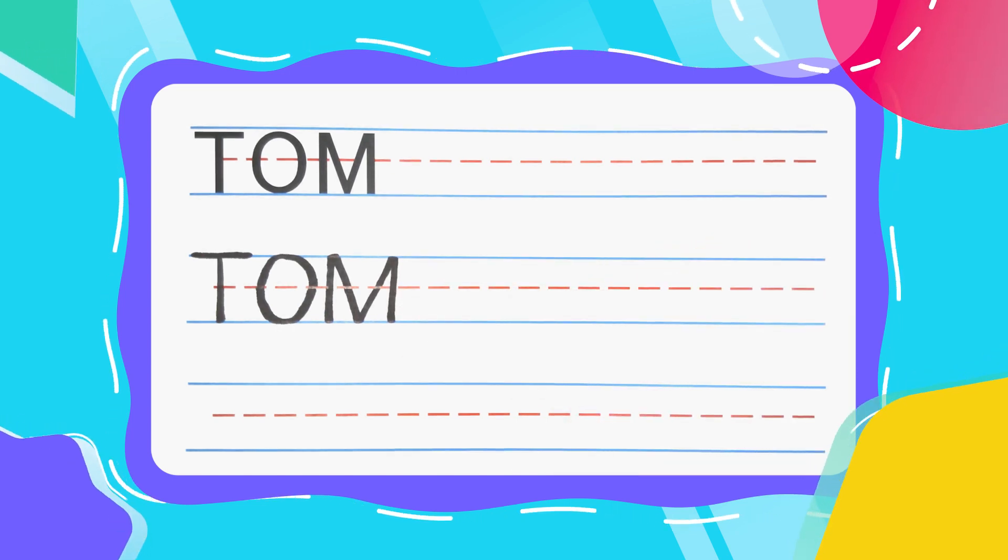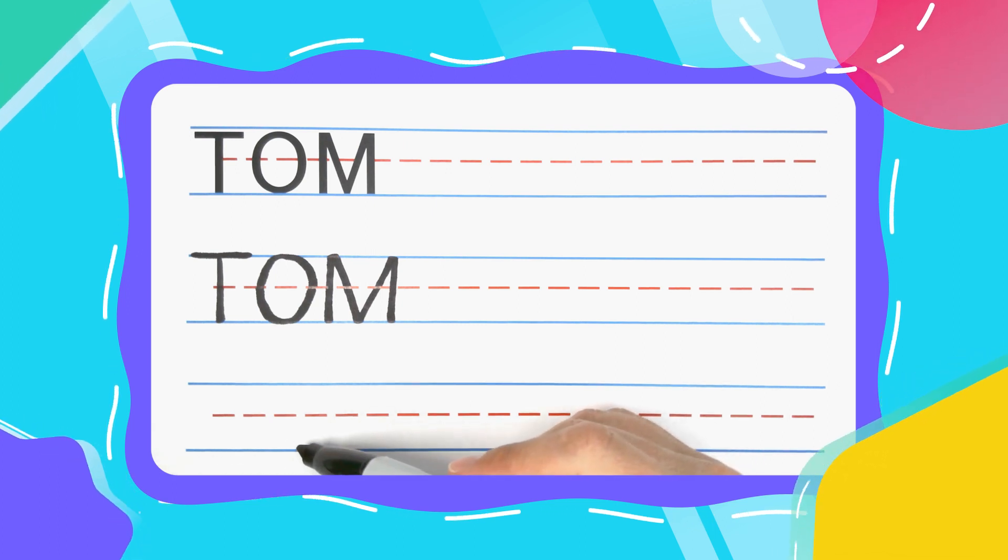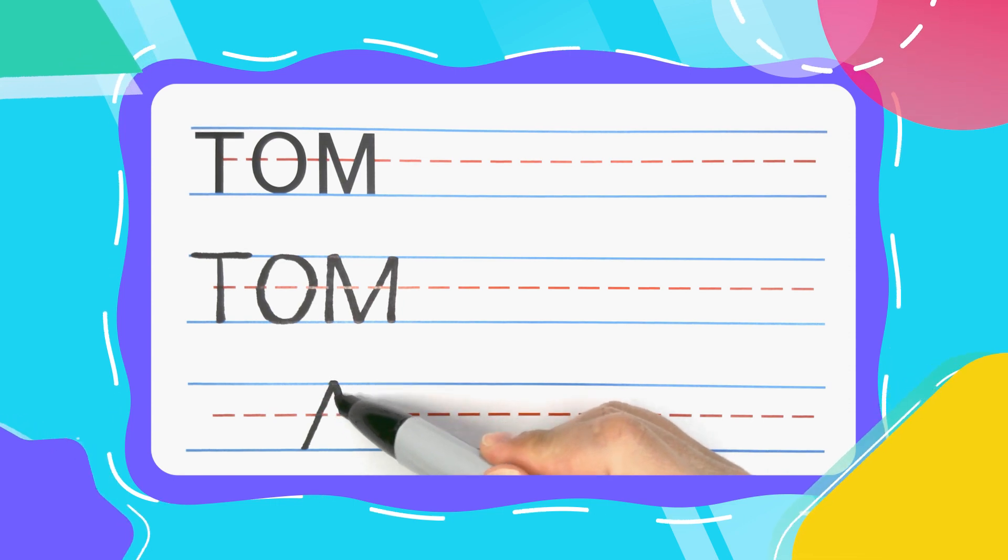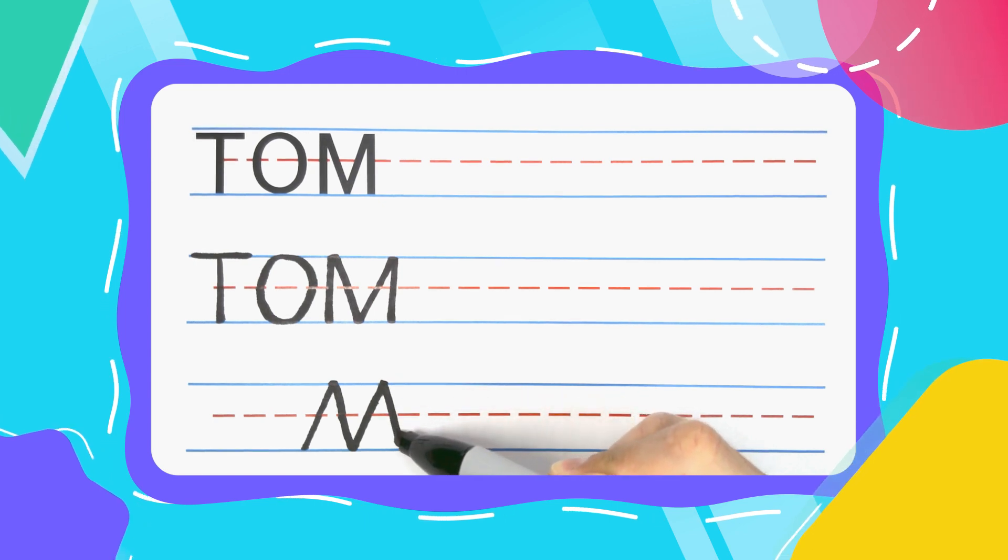You can also draw your M's wild style. Wild style M's start at the bottom and you never pick your pen up off the paper. Diagonal up, diagonal down, diagonal back up, diagonal back down.